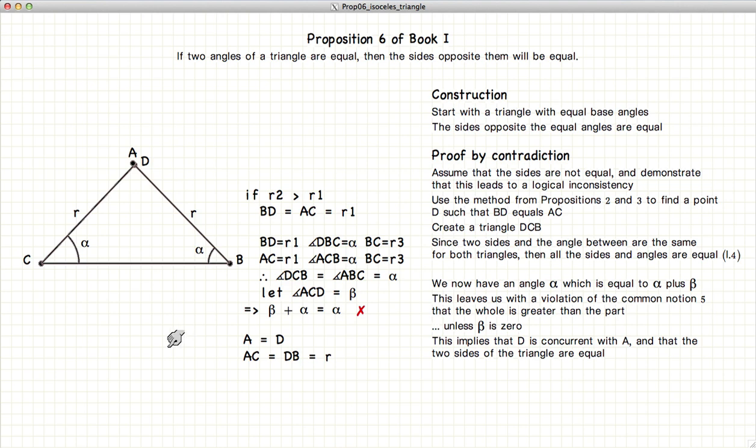And thus we have demonstrated that if we have a triangle where the base angles are equal, we have an isosceles triangle where two sides of the triangle are also equal.